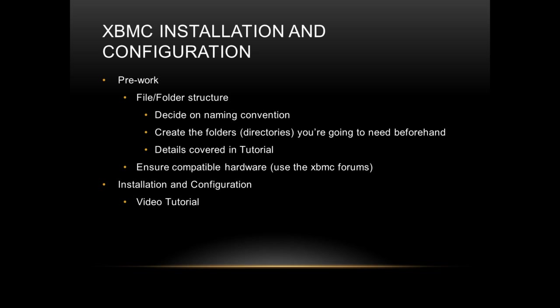Now we're going to install and configure XBMC. There's really not a lot to this component at the moment — as we do all of the other content creation tools we'll go back and tweak XBMC a little bit. Before you start, figure out your file and folder structure. There are good recommendations in the forums and the wiki. You'll want to decide on a naming convention for TV show episodes and movies beforehand, and create the folders and directory structure you're going to use. I'll show you the file structure we're going to use for these samples.